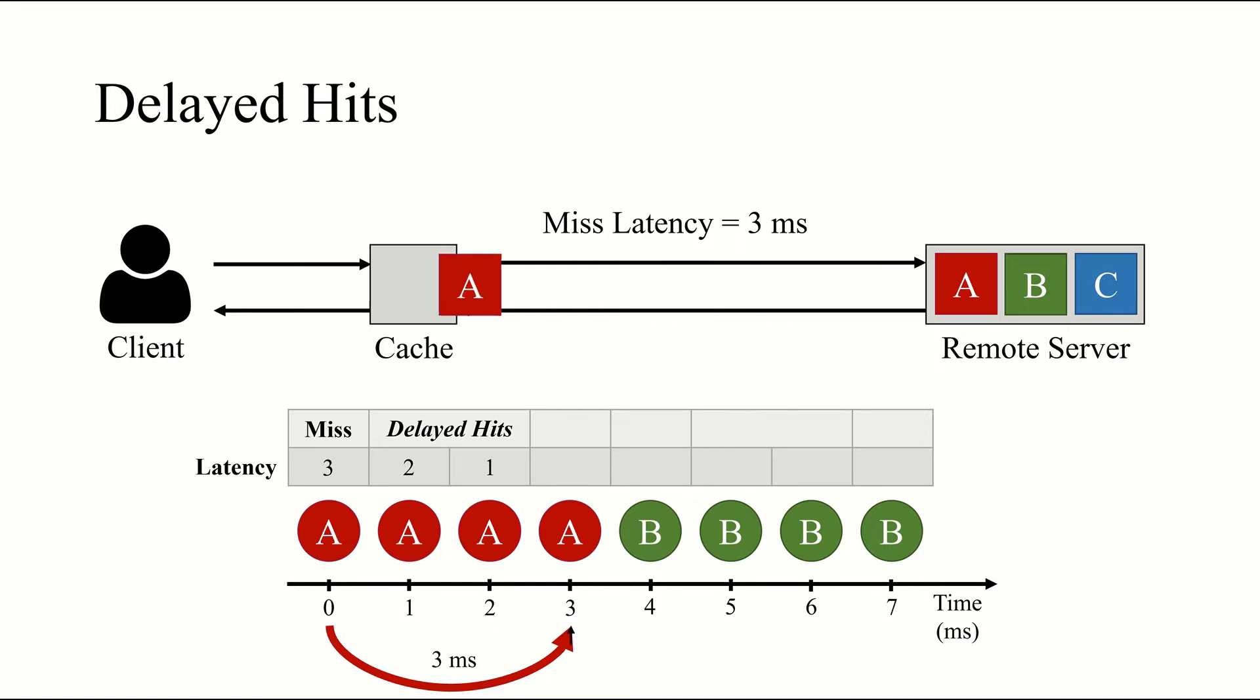At T equals 3, A finally arrives in the cache and all queued requests, including the one that just arrived, can be resolved. At T equals 4, the request for object B misses in the cache, and we initiate a fetch that will be resolved at T equals 7. Once again, the request for B at T equals 5 and T equals 6 must wait 2 and 1 millisecond respectively to be served. It's only at T equals 7 that the data finally arrives in the cache and the request can be served from there.